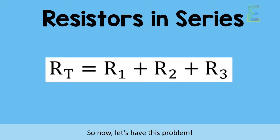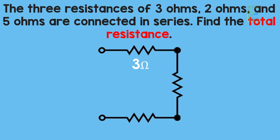So now, let's have this problem. The 3 resistances of 3 ohms, 2 ohms, and 5 ohms are connected in series. Find the total resistance.